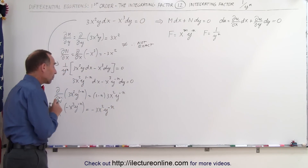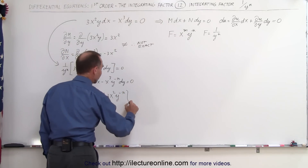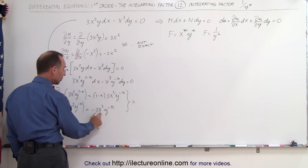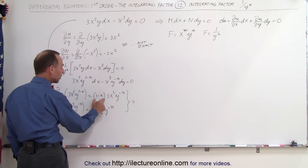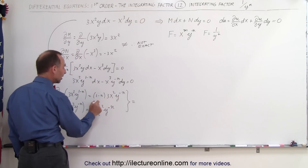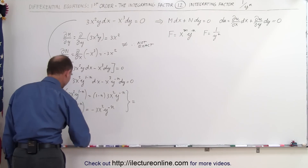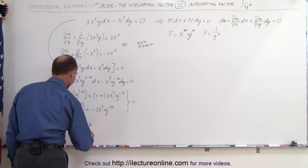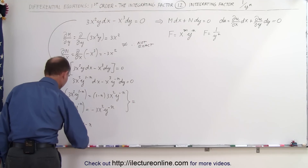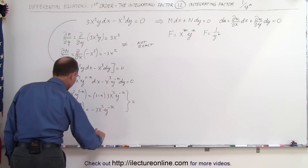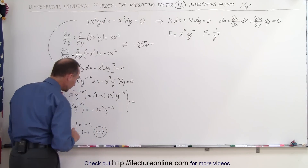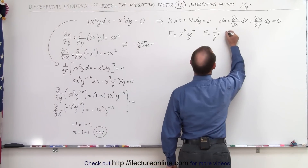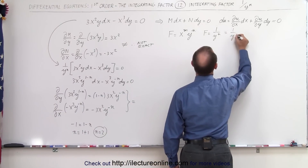For this to be exact, these must be equal. We have 3x² y to the minus n on both sides, but the exponent on y in the first expression is (1 minus n) while in the second it is minus n. So we set negative 1 equal to 1 minus n, which gives n equals 2.